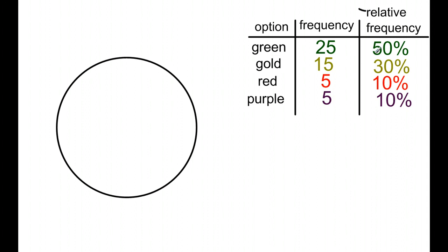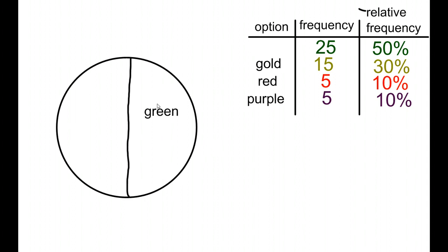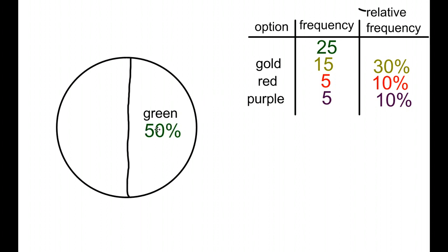We're going to look at the relative frequency. The relative frequency of our largest slice is 50%, and that's for the green. 50% of a circle is pretty easy — that's going to be about half, so we're going to draw about half of this here as our green section. We'll go ahead and copy that label right in. You can put the frequency in, 25, or some people choose to use the relative frequency — it depends on what your situation requires. We'll go ahead and use the relative frequency in this one.